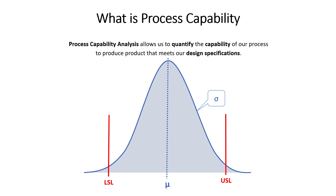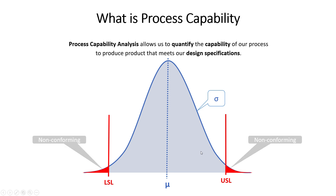Process capability analysis is a tool or method to quantify the capability of our process to meet the design specifications. Our customer has a specification, and a capability analysis study quantifies how much of our product will actually meet the customer's needs. When we add the specification limits on top of the output distribution, we can visualize the amount of non-conforming product in the tails.